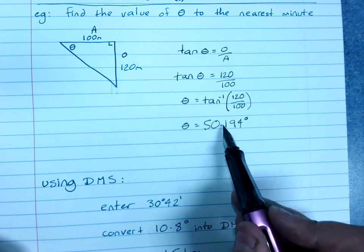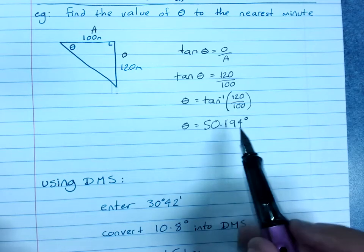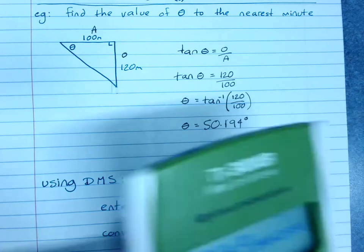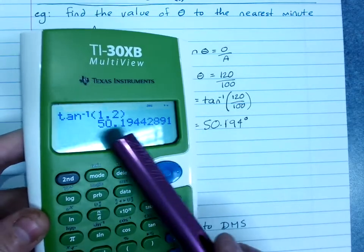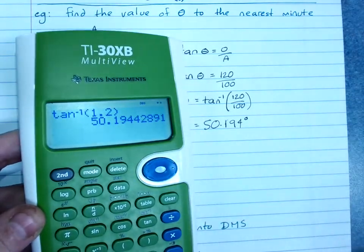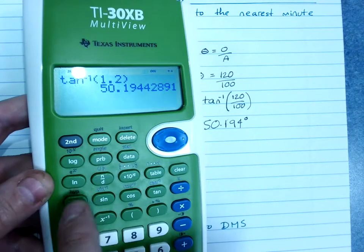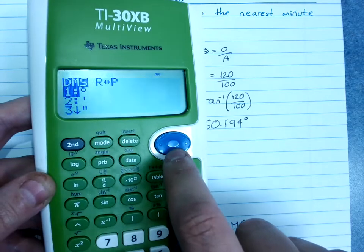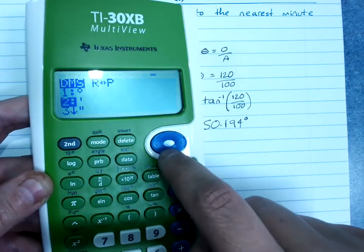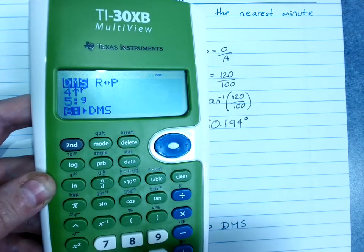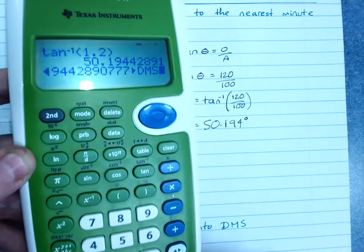Let's have a look at how to do this. To get a decimal answer into degrees, minutes, and seconds, you use the angle menu, which is second function angle. You can see that we've got DMS here, and if we scroll down, you'll get to DMS. This is saying please put my answer into degrees, minutes and seconds. Hit enter.